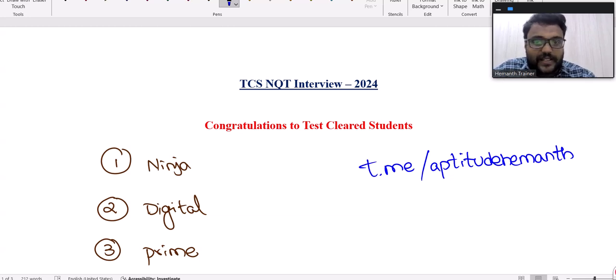First question everybody is asking: I already have TCS Ninja offer, now I got Digital interview. If I don't perform well in Digital, will my previous offer be revoked or cancelled?